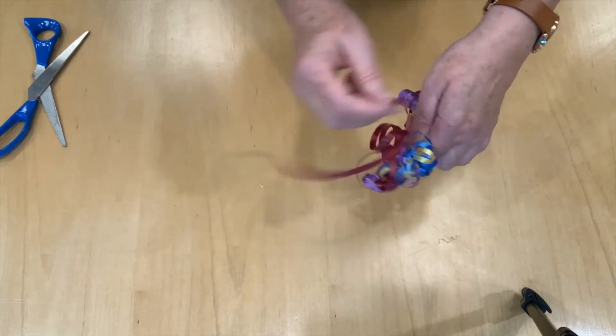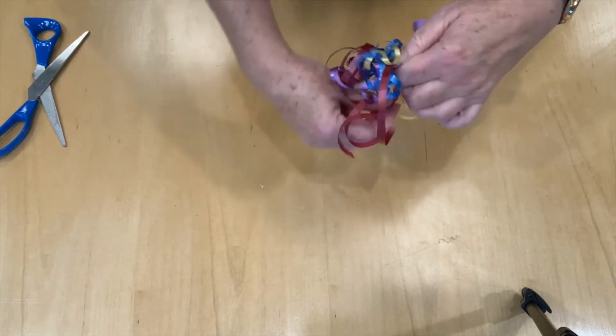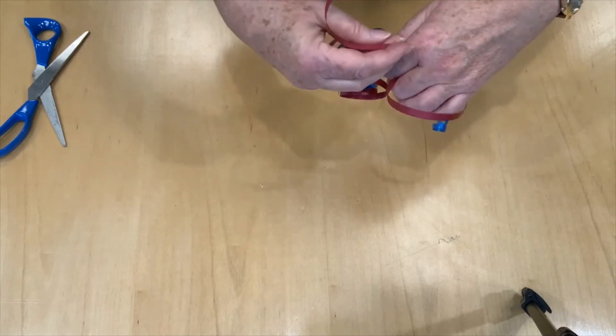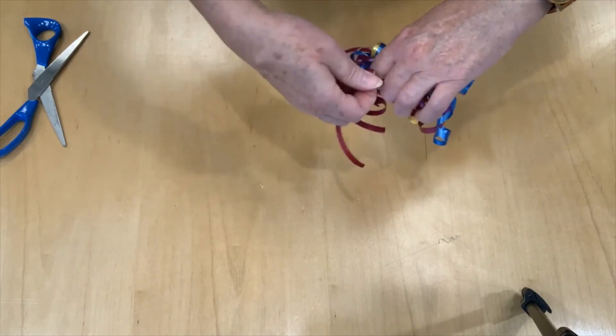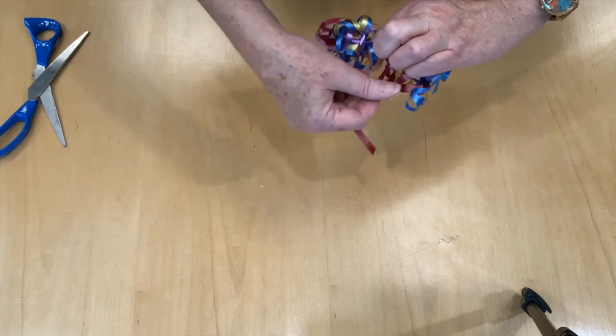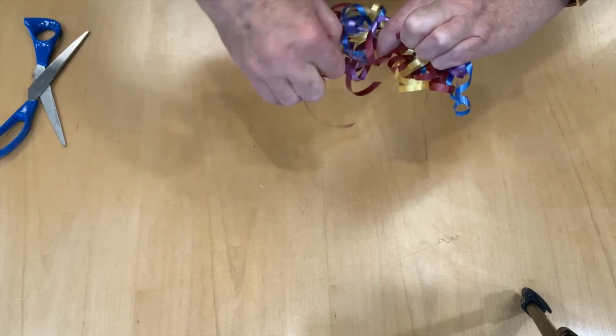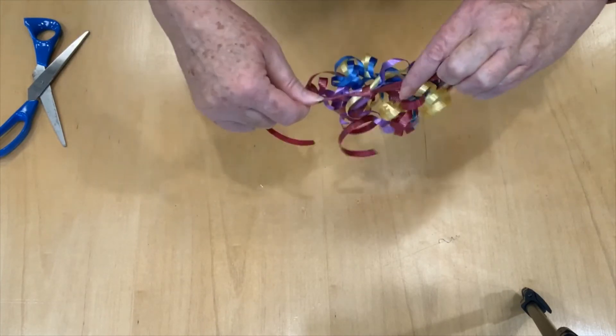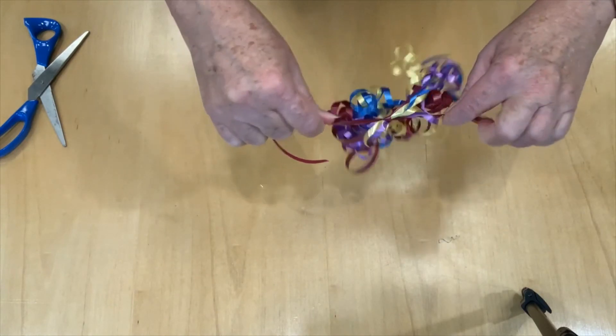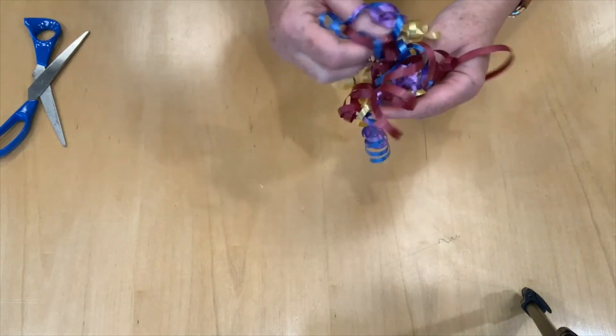Now we have our extra piece. We're going to be tying it around the center. Usually this is where I use my teeth, but I'm going to try and do it without. There we go. It's going to be nice and tight. You've got a lovely bow.